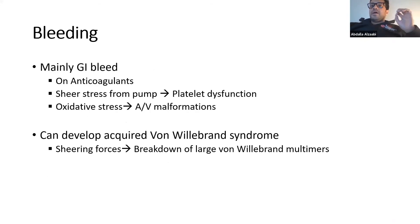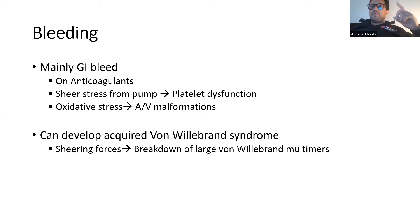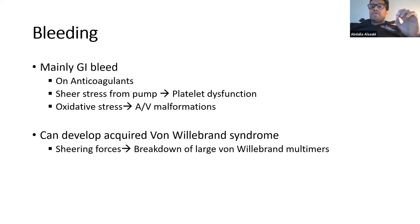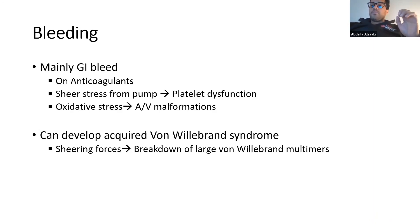Regarding bleeding, these patients are highly susceptible to GI bleed. There are multiple contributing factors: they are on anticoagulants; the shear stress caused by the pump on the blood can cause platelet dysfunction and von Willebrand factor dysfunction. It has also been found that these patients are highly susceptible to GI angiodysplasia. The reason for this is not fully understood but is most likely secondary to oxidative stress caused by the machine itself.